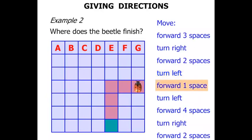Then the beetle is going forward one space. The beetle is to turn left again. Watch carefully. Then forward four spaces. One, two, three, four.